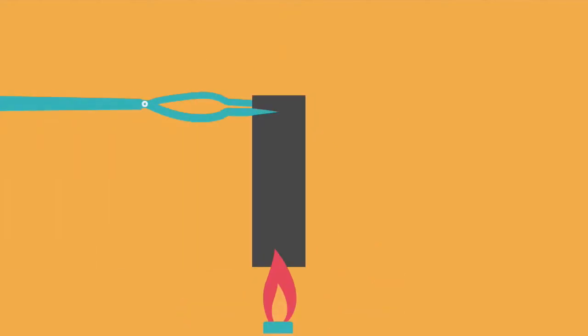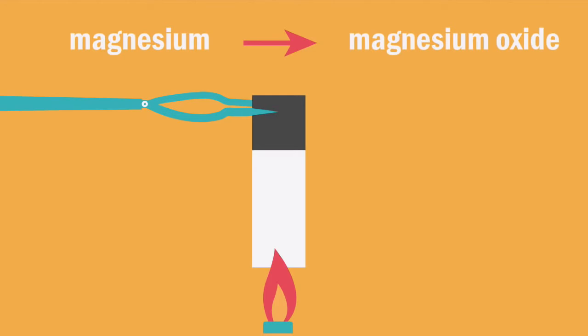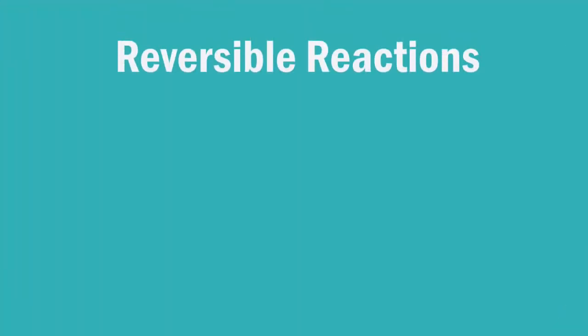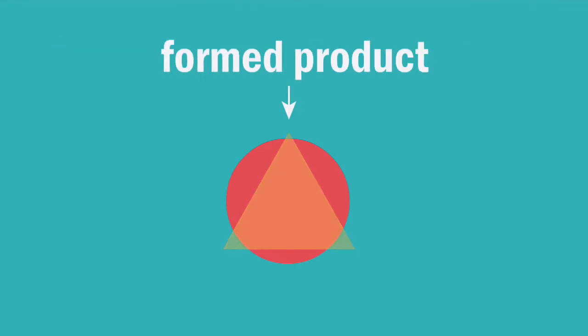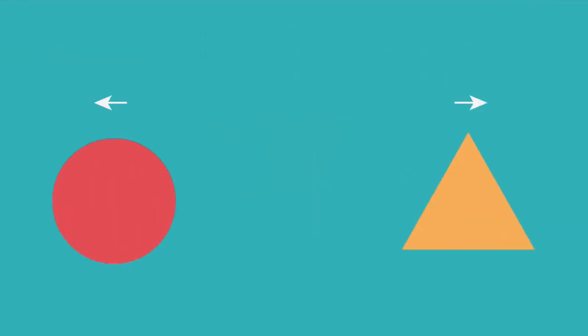A good example is the combustion of magnesium to form magnesium oxide. Reversible reactions are reactions where formed products can revert or go back to their original reactants. Since the reaction can proceed in either direction, we use this reaction arrow to represent reversibility.